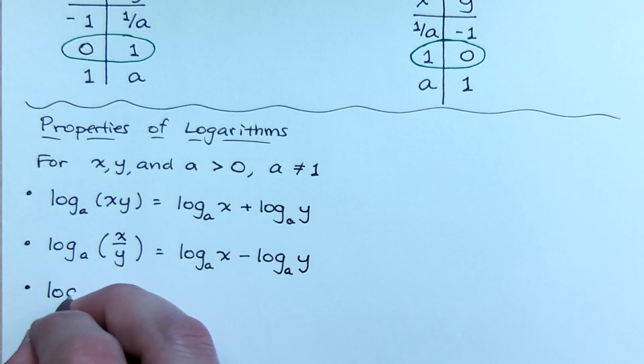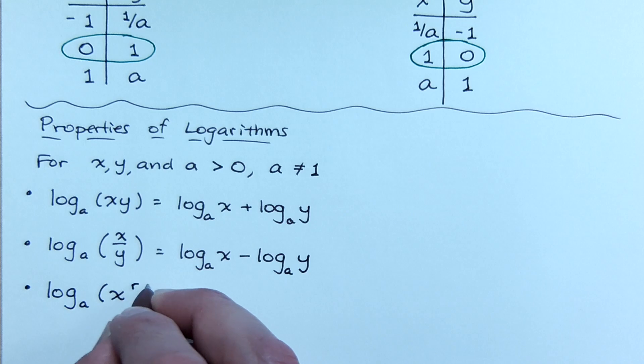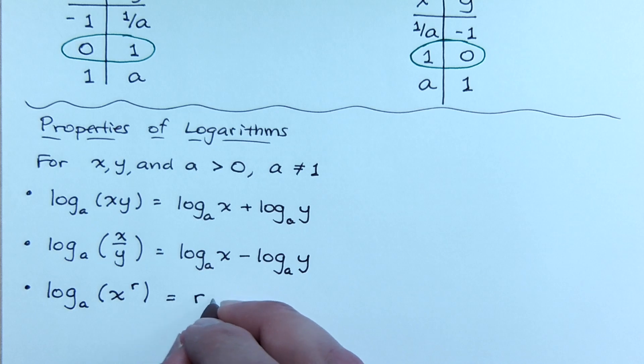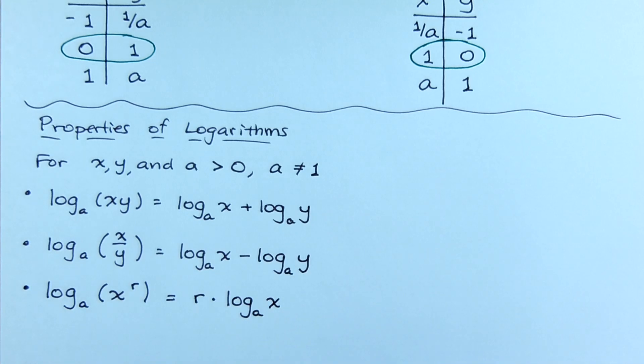And this last one that says log base a of x to some power, let's call that r. You can write this r times log base a of x. So if you have a power inside of a logarithm, you can just bring that out in front. So these are properties we're going to use to kind of rewrite and split up our logarithms here in just a moment.